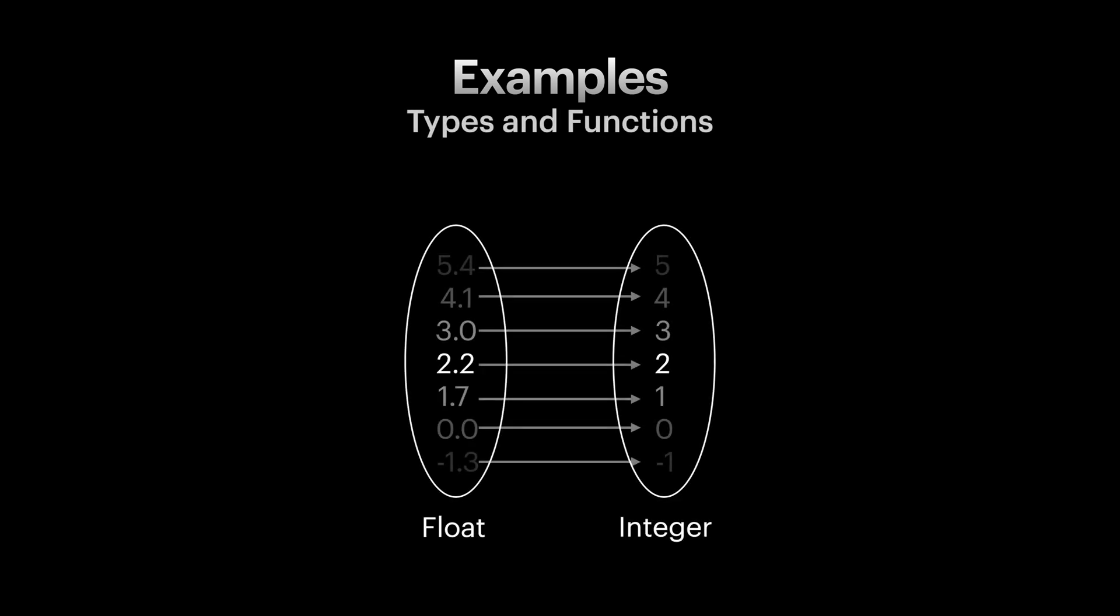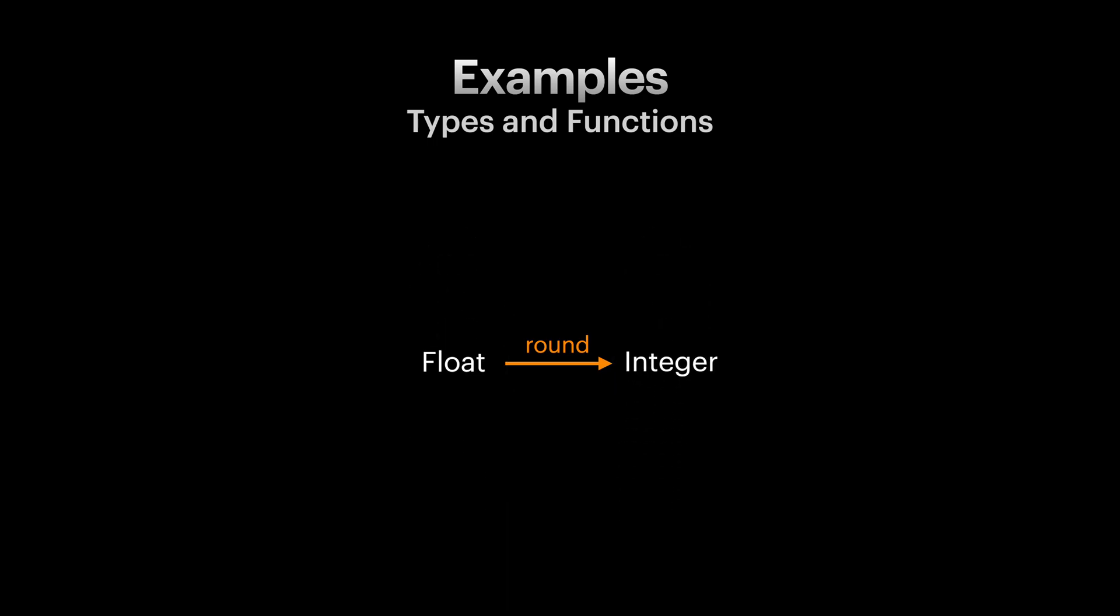For our last example, let's look at something more practical. Let's think about types and functions which we use in our day to day life as programmers. We are going to start from a model and try to see if we can come up with a category. As you remember from earlier videos in this course, functions are simply a mapping of values between two types. Here, for example, we have a function that rounds a floating point values to integer values. So let's simplify our diagram here and have our round function with an arrow from float type to an integer type.